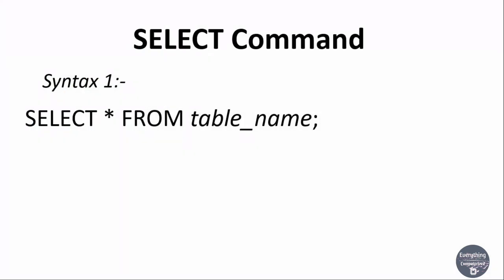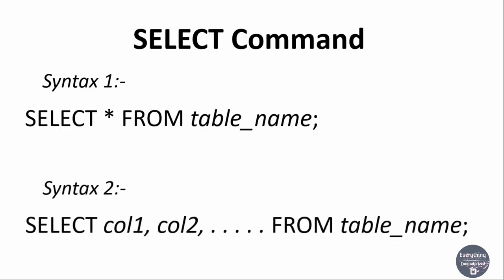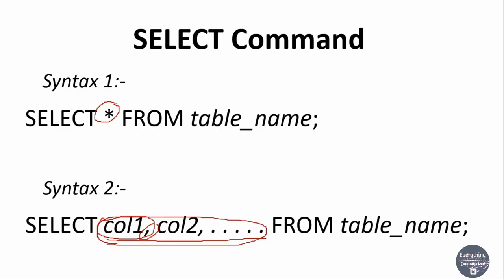Suppose you want to view the information of only specific columns and not all of the columns — then you can use the second syntax of the SELECT command. Here the star mark is replaced by the actual names of the columns separated by commas. You can either choose to select a single column or multiple columns depending upon the question.